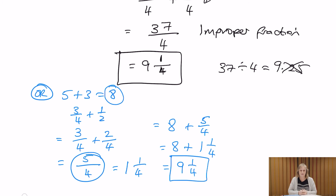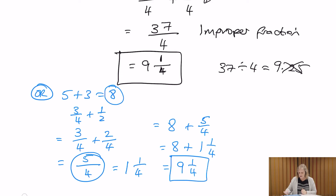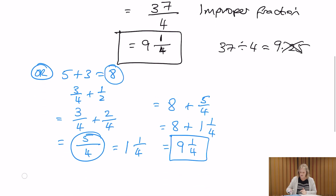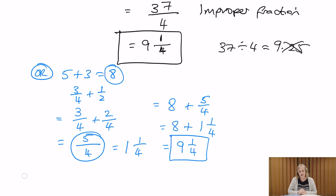You can use whichever method you feel most comfortable with. But there is that option with adding and subtracting fractions. I would highly recommend that when we have mixed numbers in the question, we change those to improper fractions, follow through, and then give our answer as the mixed number at the end — as opposed to the second method of splitting it up.